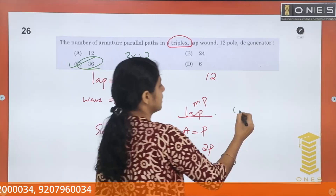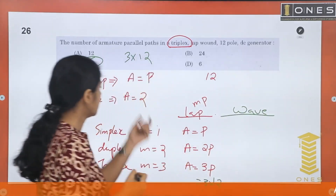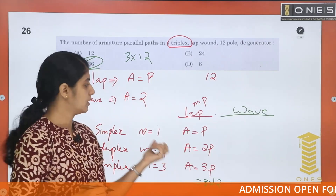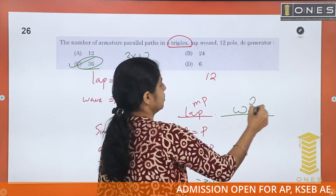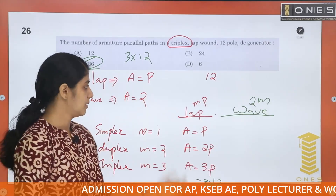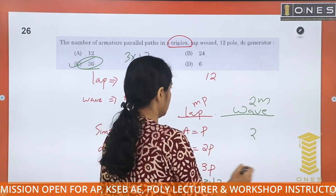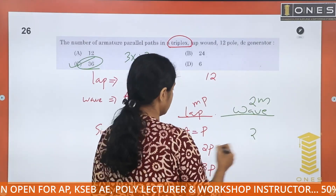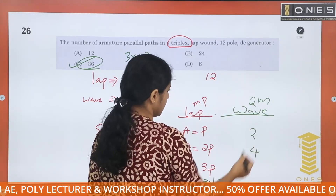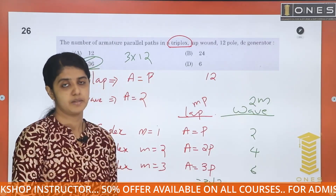For wave winding, a equals 2m. So simplex wave: a equals 2; duplex wave: a equals 4; triplex wave: a equals 2 × 3 equals 6.